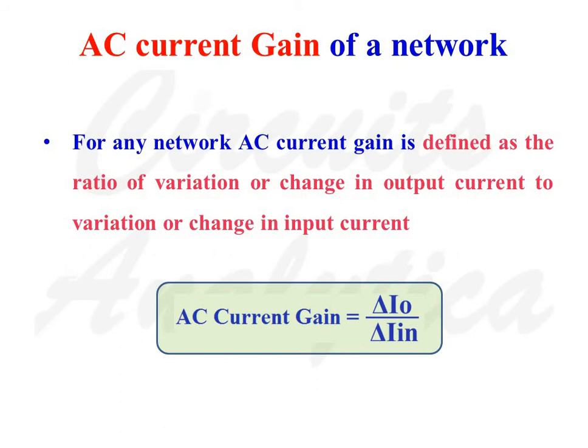Let us start our discussion with AC current gain of a network. For any network, AC current gain is defined as the ratio of variation or change in output current to variation or change in input current. AC current gain is equal to delta Io divided by delta Iin, where delta Io is the variation in output current and delta Iin is the variation in input current.